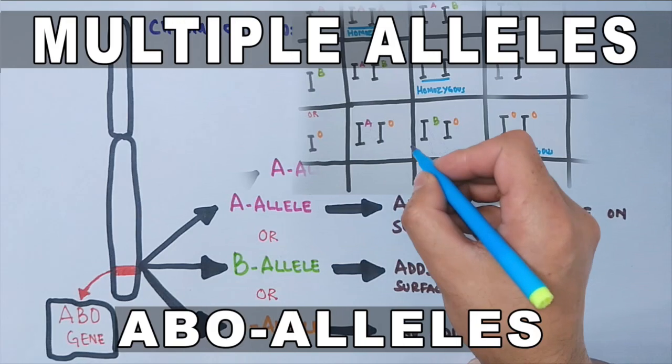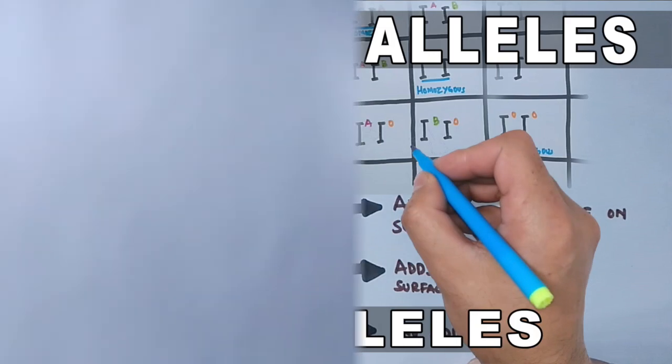In the previous video we discussed multiple alleles by taking the example of ABO alleles found within the population.